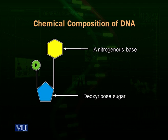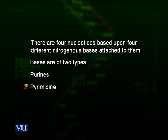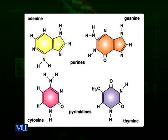Nucleotides are categorized into two groups according to differences in their structures: two are called purines and two others are called pyrimidines. The purines are adenine and guanine — they have a double ring structure with two rings joined together. The pyrimidines are thymine and cytosine — they are single ring structures.